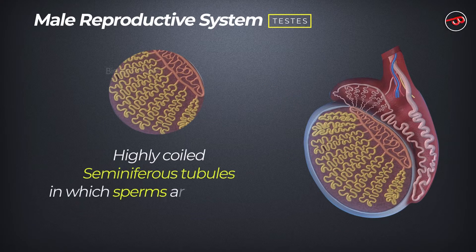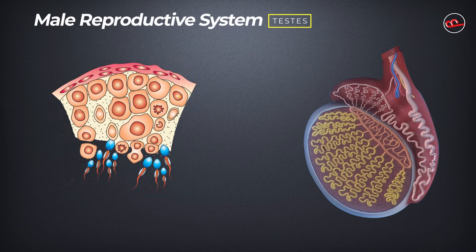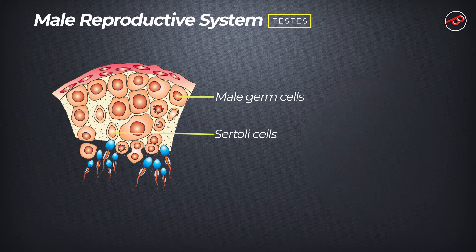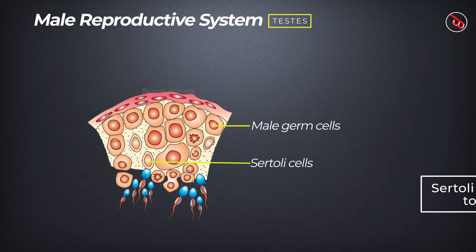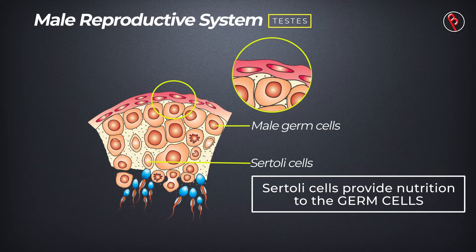Each lobule contains one to three highly coiled seminiferous tubules in which sperms are produced. Inside the seminiferous tubules, two types of cells are present: male germ cells and Sertoli cells. Male germ cells develop into sperms, and Sertoli cells provide nutrition to the developing spermatids.